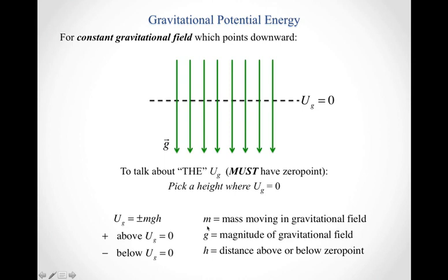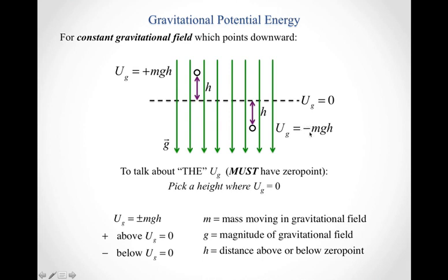With positive mass, positive g, and positive h — where h is the distance above or below the zero point — if an object is sitting above my zero point, I calculate this with a plus sign, giving plus mgh. On the other hand, if I've got an object below the zero point, I need to use a minus. The minus sign takes care of the sign correctly: positive mass times positive g times positive h, with the minus sign applied out front because the object is below my chosen zero point.